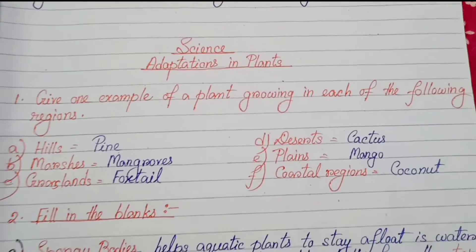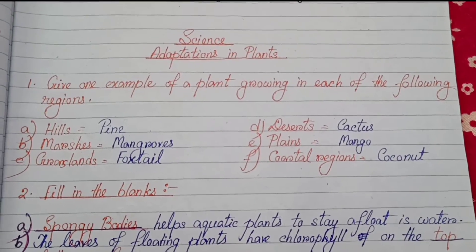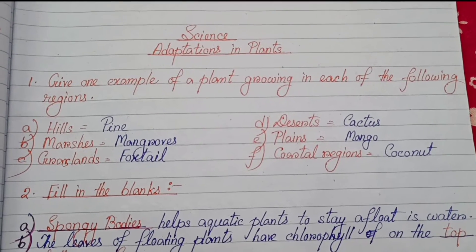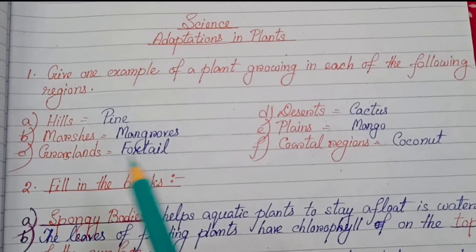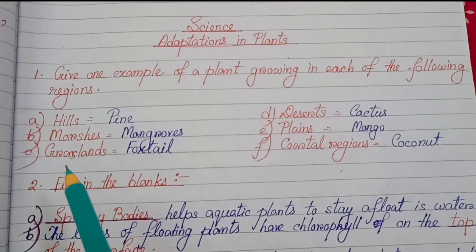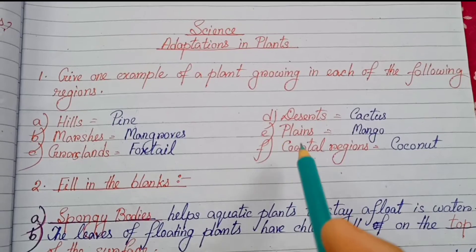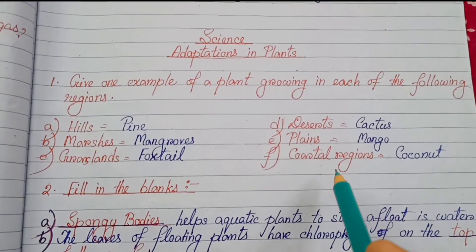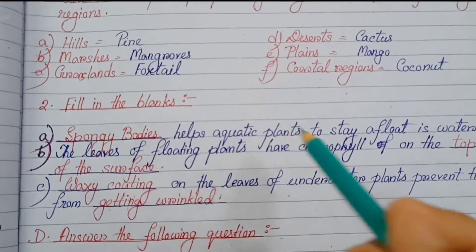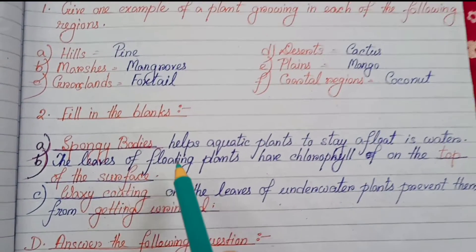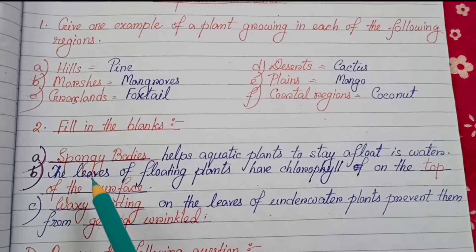Number one: give one example of a plant growing in each of the following regions. Hills — pine. Marshes — mangroves. Grasslands — foxtail. Deserts — cactus. Plains — mango. Coastal regions — coconut.